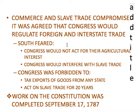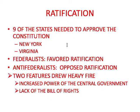After all this work, the Constitution was completed on September 17, 1787. In order to ratify it, nine of the states needed to approve it. New York and Virginia, big states, were unsure about the new Constitution — they felt it didn't give states enough power. Two sides were created: the Federalists, who wanted ratification, and the Anti-Federalists, who opposed it.